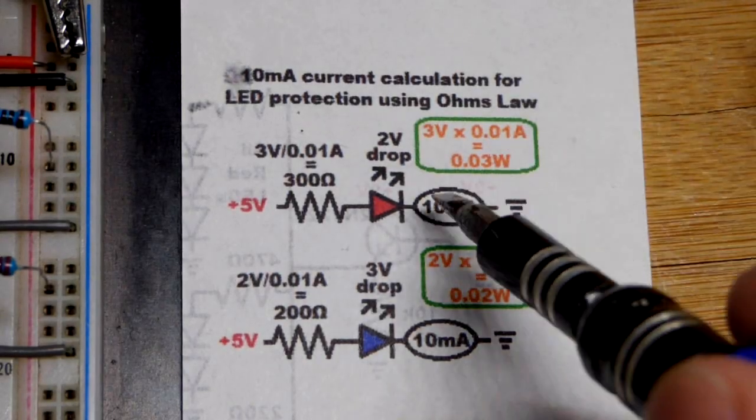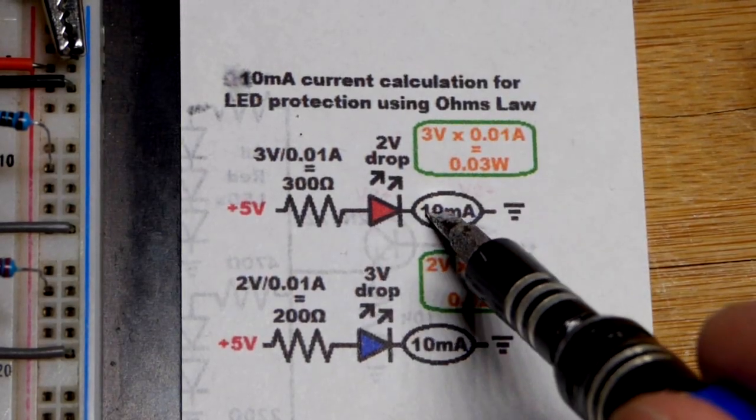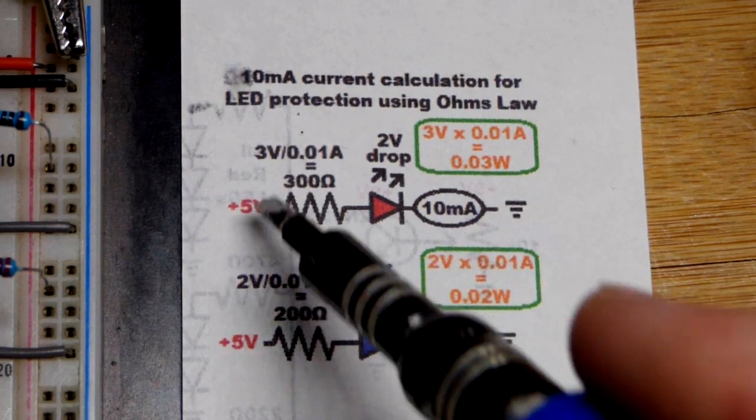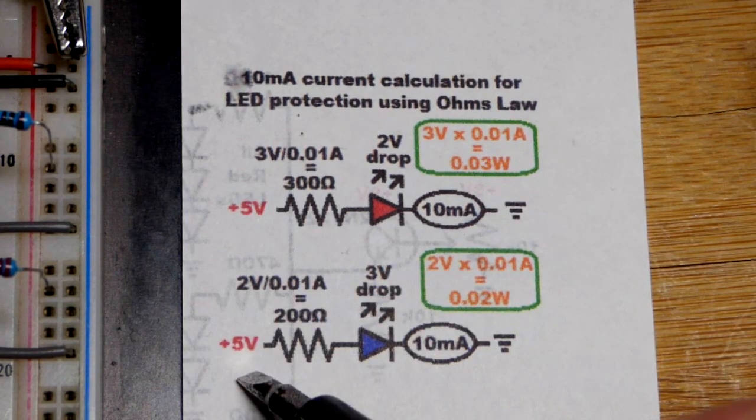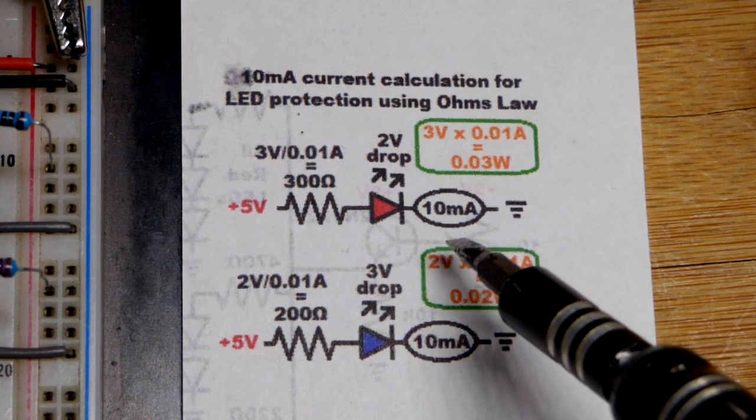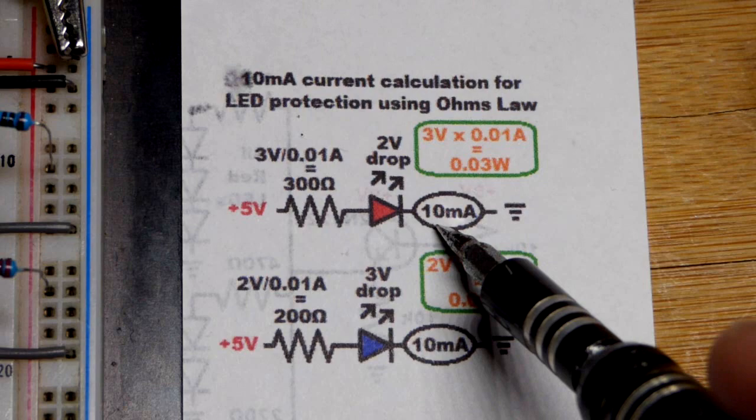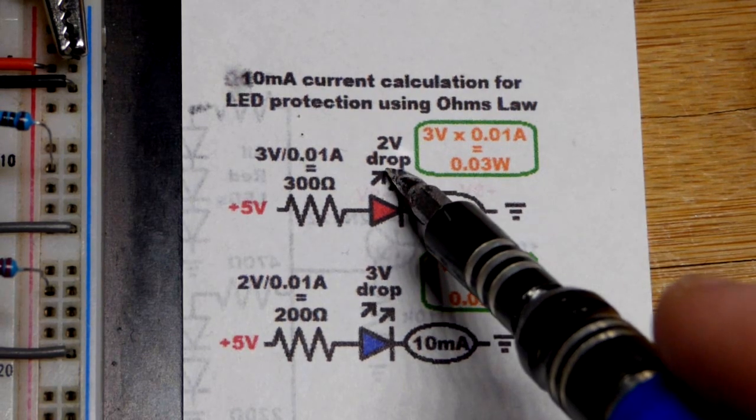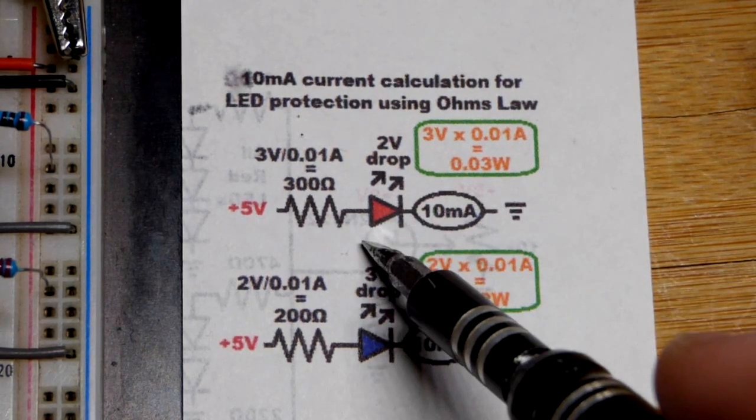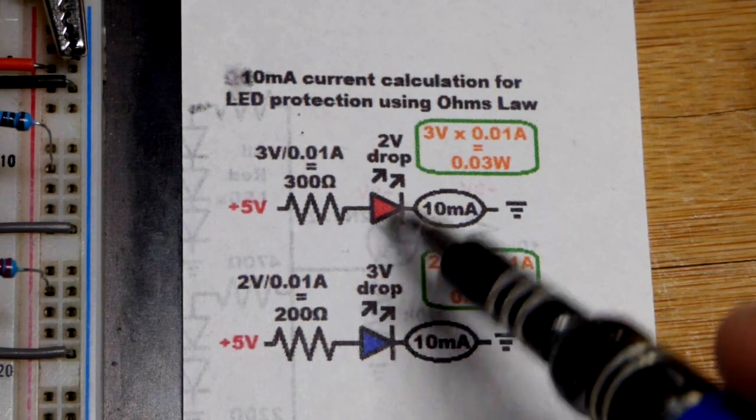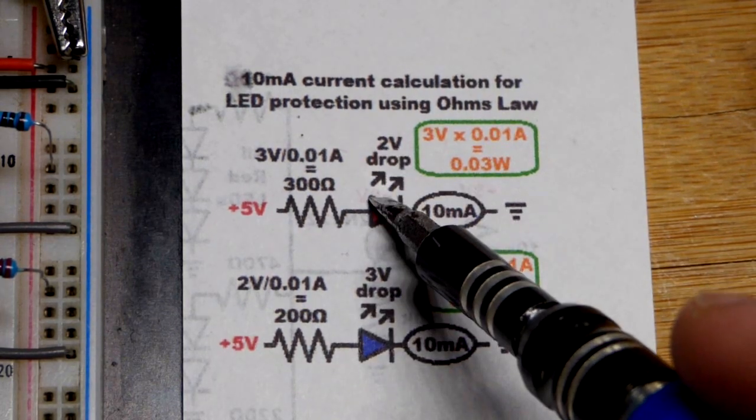In this video, our goal is to get about 10 milliamps of current through an LED using a 5 volt power supply. All these numbers are approximate. We have a red LED that will drop about 2 volts and a blue LED that will drop about 3 volts. For the red LED, we'll have 3 volts across the current limiting resistor.